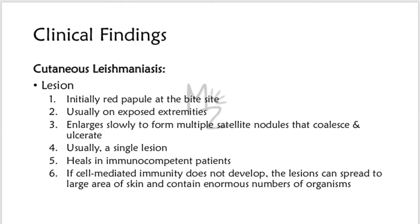Clinical findings in cutaneous leishmaniasis: initially a red papule appears at the bite site, usually on an exposed extremity. It enlarges slowly to form multiple satellite nodules that coalesce and ulcerate — it is usually a single lesion. It heals in immunocompetent patients. However, if cell-mediated immunity does not develop, the lesions can spread to a large area of skin and contain enormous numbers of organisms.